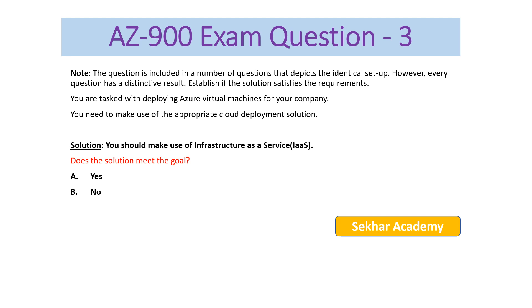AZ-900 exam question number three. The scenario is the same as the previous questions — deploying Azure virtual machines for your company. This time the proposed solution is: you should make use of Infrastructure as a Service (IaaS). Azure virtual machines are included in Infrastructure as a Service in Microsoft Azure, so the solution does meet the goal. The answer is A: Yes.